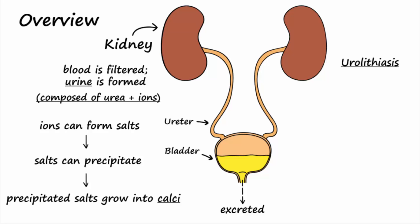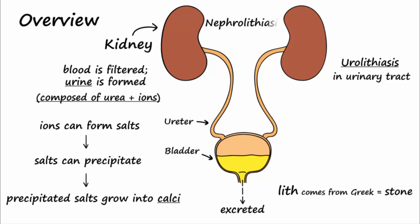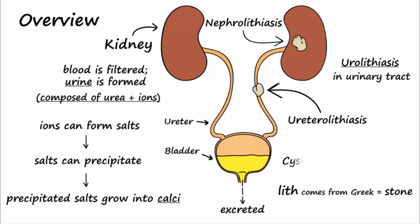Urolithiasis is a term that refers to stones forming in the urinary tract. The word 'lith' comes from Greek and means stone. A stone located in the kidney is known as nephrolithiasis, or renal calculi. If the stone is located in other parts of the urinary tract, such as the ureter or bladder, then it is known as ureterolithiasis, or cystolithiasis.